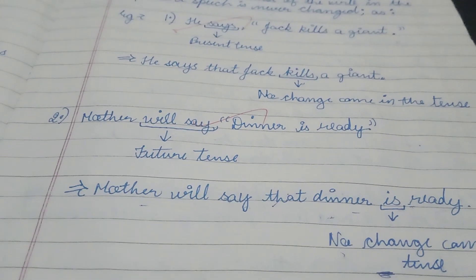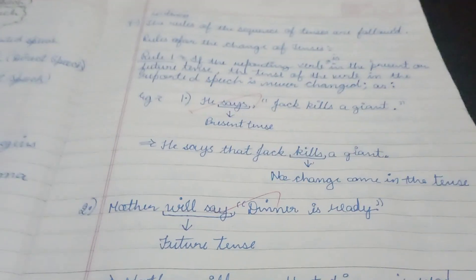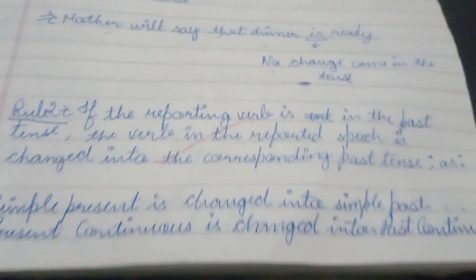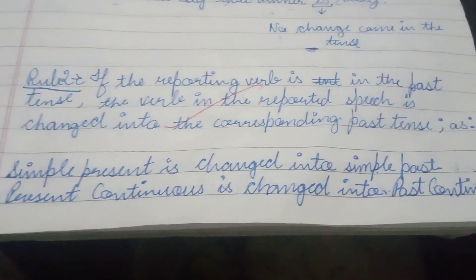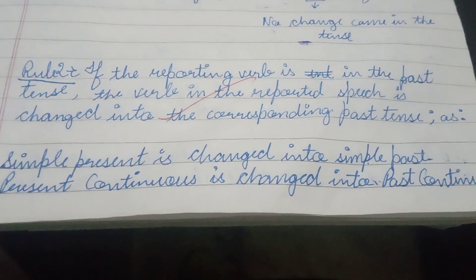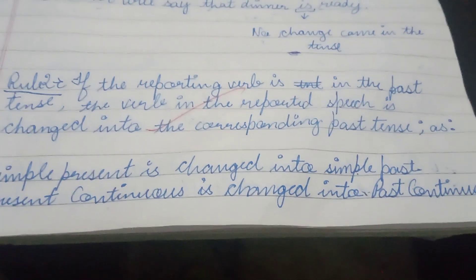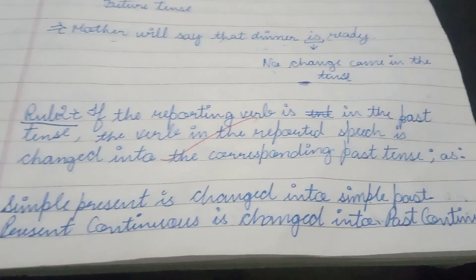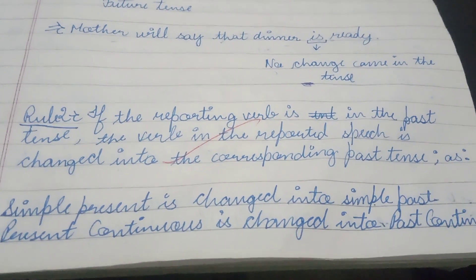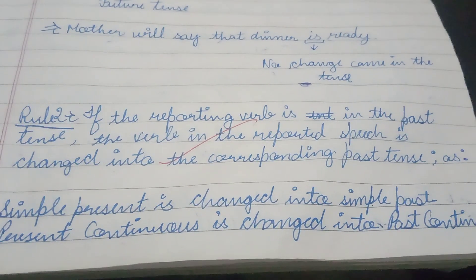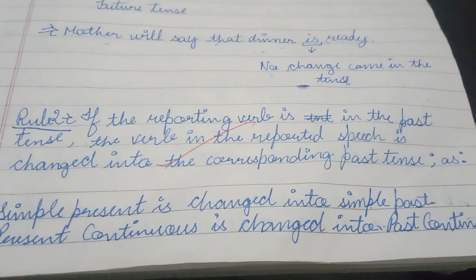Now we have Rule 2, where we follow the sequence of tenses. Rule 2 states: if the reporting verb is in the past tense, the verb in the reported speech is changed into the corresponding past tense. Before we look at the sequence, let us understand Rule 2 — it means that if the reporting verb is in past tense, as in the very first example 'Raman said I am tired.'